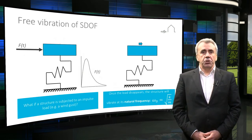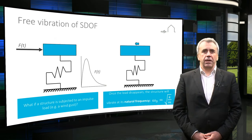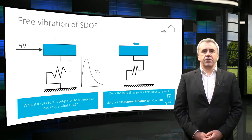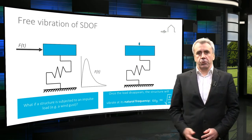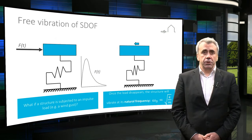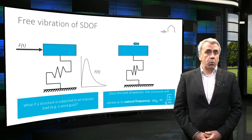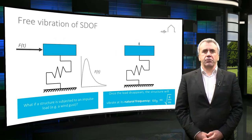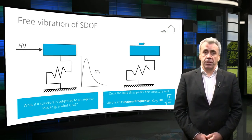I mentioned the word vibration. What is it? It is a repetitive periodic motion, as the animation at the right of this slide shows. It can be excited by, for example, knocking on the structure by a hammer, or by a wind gust. One of the main characteristics of this vibration is its frequency.